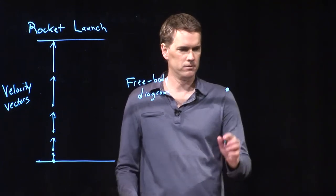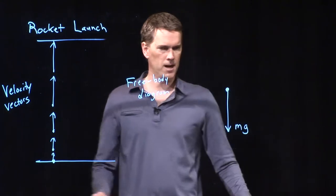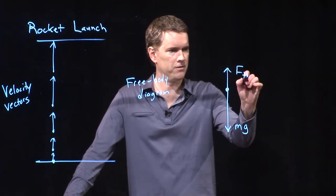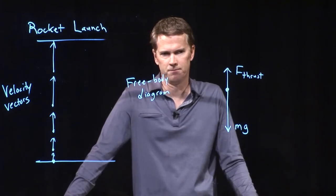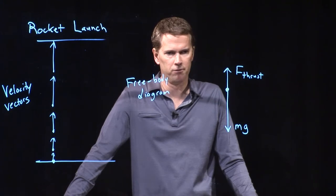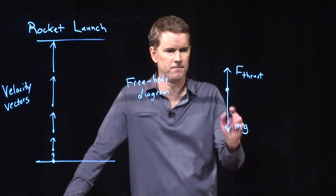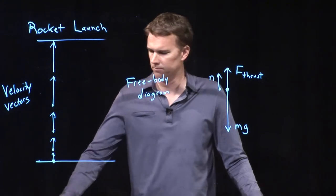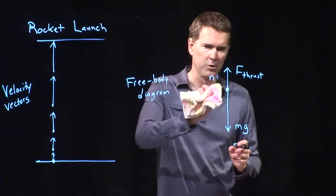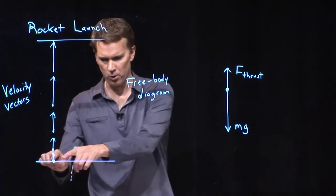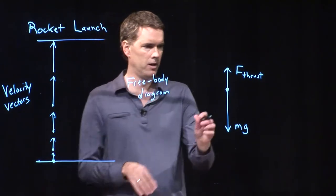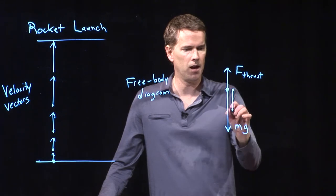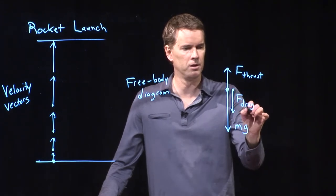There's gravity going down. What else, Himanshu? There's also thrust from the rocket going up. Anything else? There's also a normal force going up with the rocket. A normal force from what? Actually, there's air resistance going down. Is there a normal force? No — there's no normal force because the rocket is not in contact with the ground. As soon as it takes off, it's not in contact with the ground anymore, so there can't be any normal force. The last thing mentioned was air resistance going down, which is our drag force due to air resistance.